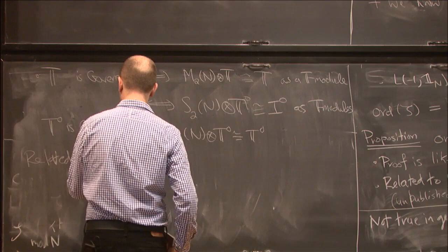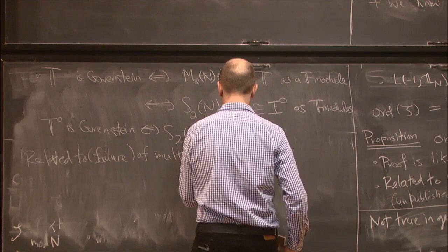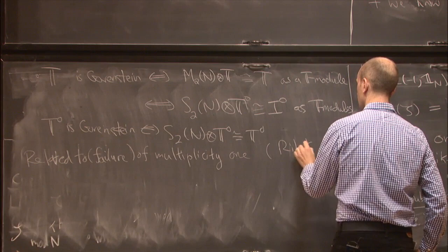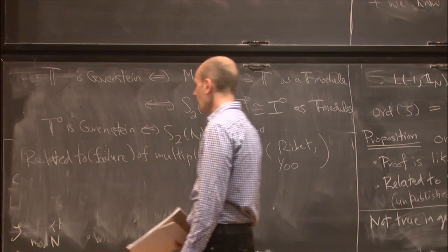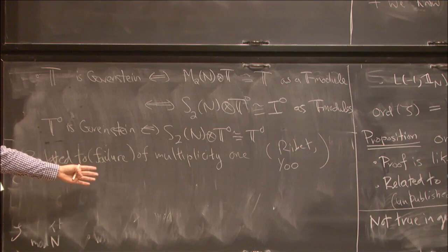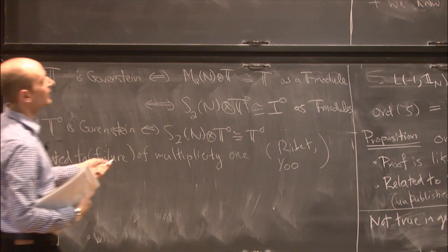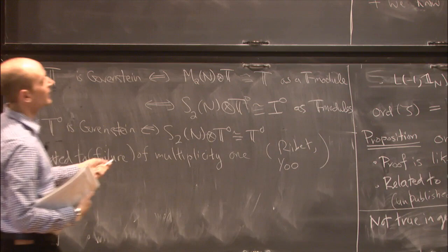The failure of T_0 to be Gorenstein is related to the failure of multiplicity one, studied by Ribet and his student Yu. The fact that T_0 is not Gorenstein says you get a failure of multiplicity one for a particular lattice. But T being Gorenstein says you can take another lattice that's more natural for the big T, and you get multiplicity one. There's also an algebraic number theory condition under which the short exact sequence splits — something about whether some prime splits in some extension.